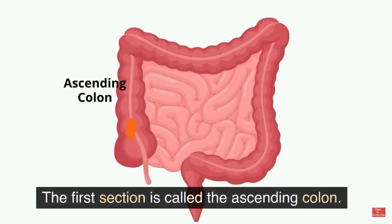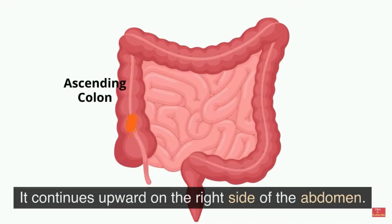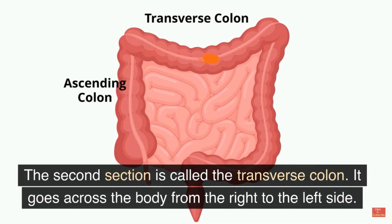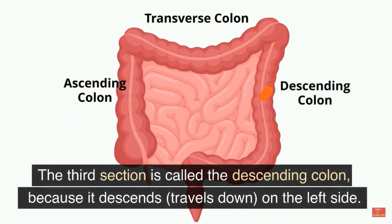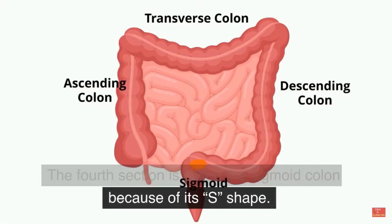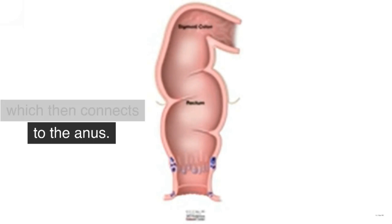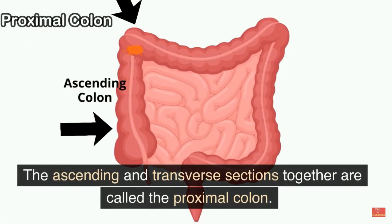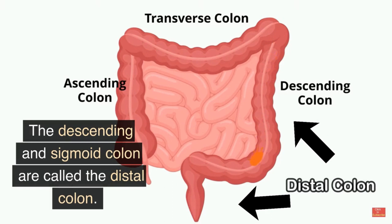The first section is called the ascending colon. It starts with a pouch where undigested food comes in from the small intestine, and continues upward on the right side of the abdomen. The second section is called the transverse colon, which goes across the body from right to left. The third is the descending colon, which travels down on the left side. The fourth section is called the sigmoid colon because of its S shape. The sigmoid colon joins the rectum, which then connects to the anus. The ascending and transverse sections together are called the proximal colon, while the descending and sigmoid colon are called the distal colon.